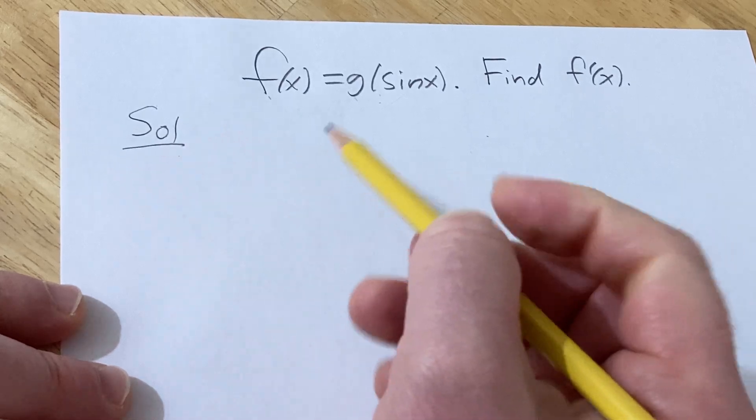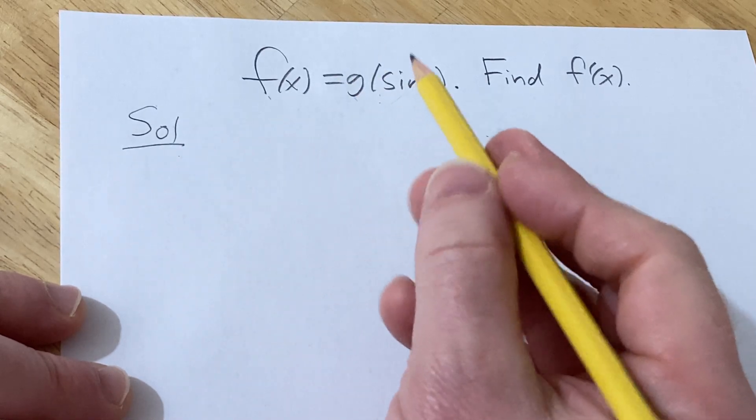Let's go ahead and work through it. So to do this problem we're going to use something called the chain rule.